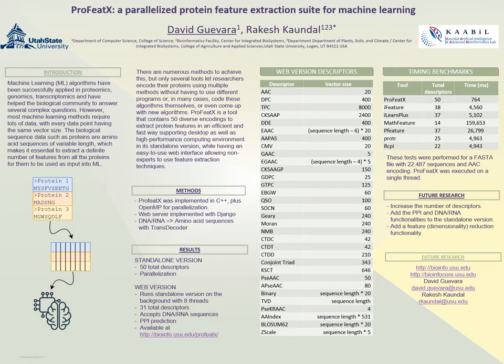The benchmark times were 764 versus 4,560, which is quite a big difference. The tests were run on a single thread to keep things fair — since other tools don't use parallelization, using multiple threads would have been like cheating.